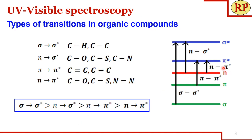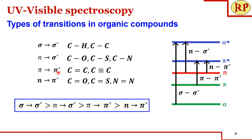We also have a non-bonding orbital where the lone pair of electrons resides — that is, in hetero atoms such as oxygen, sulfur, nitrogen, etc. There are four types of transitions: sigma to sigma*, pi to pi*, n to pi*, and n to sigma*. Whenever you see sigma it means a single bond; n means a hetero atom with a lone pair of electrons; and pi means a multiple bond, i.e., a double or triple bond.